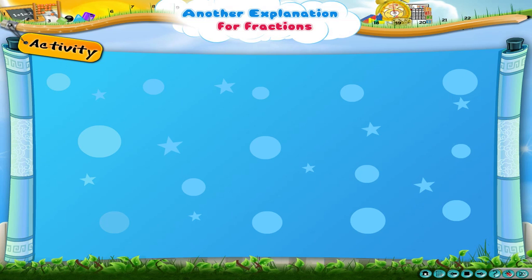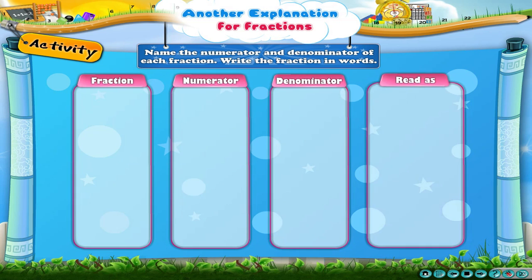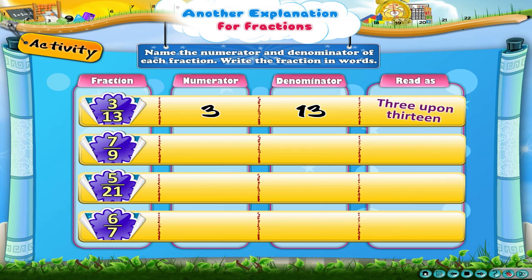Let us do another activity. For each fraction, name the numerator and the denominator, and write the fraction in words. Answer the first one: here the numerator is 3, the denominator is 13, and the fraction is read as 3 upon 13.